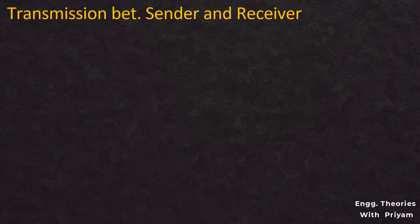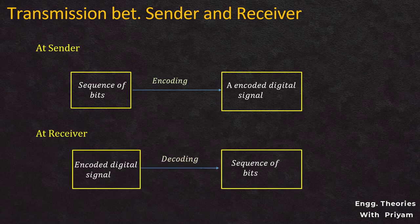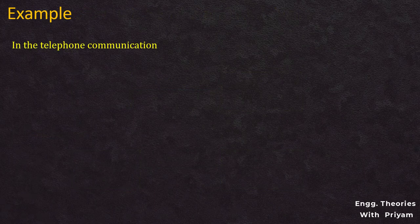At the sender, digital data represented by a sequence of bits is encoded into a digital signal. At the receiver, the digital data is recreated by decoding the digital signal. An example of this type of system is telephone networks.